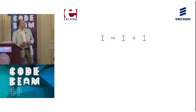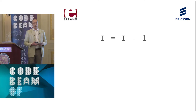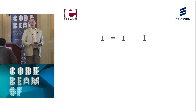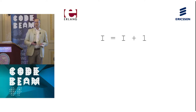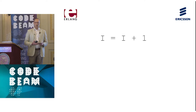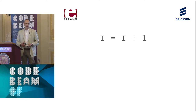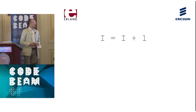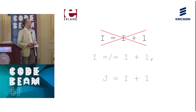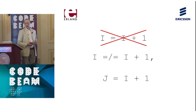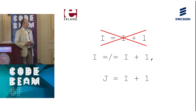Well, time goes by, and about 20 years later, having been programming most of that time, I had gotten used to the idea of assignment. Then I took a course on concurrent programming in Sweden and met Erlang for the first time, and found out that my initial gut feeling had been right — I cannot equal I plus one, but J can be bound to I plus one. I had found functional programming with single assignment.